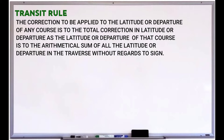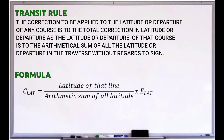The method of adjusting using the transit rule is similar to the compass rule. The main difference is that with the transit rule, the latitude and departure corrections depend on the length of the latitude and departure of the course respectively, instead of both depending on the length of the course. The formula: correction of latitude of any line equals the latitude of that line over the arithmetic sum of all latitudes, times the error in latitude.